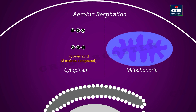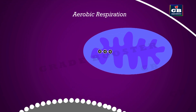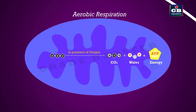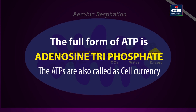Now, this pyruvic acid molecule enters the mitochondria. Inside the mitochondria, these pyruvic acid molecules turn into water and carbon dioxide. In this process, energy is released. This energy gets packed in ATP molecules. The full form of ATP is adenosine triphosphate.